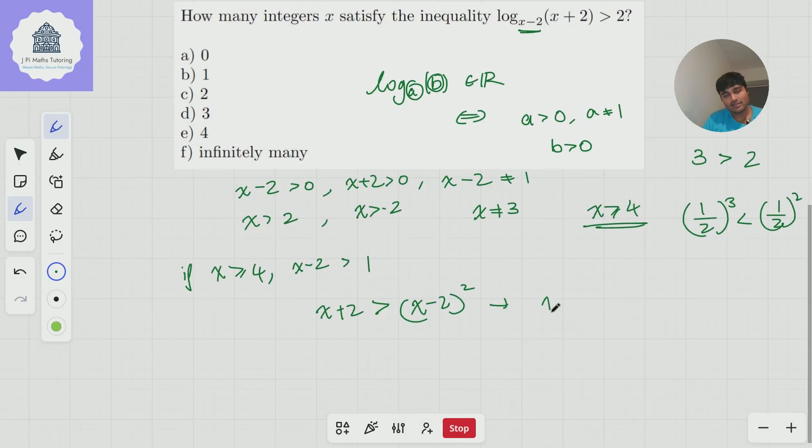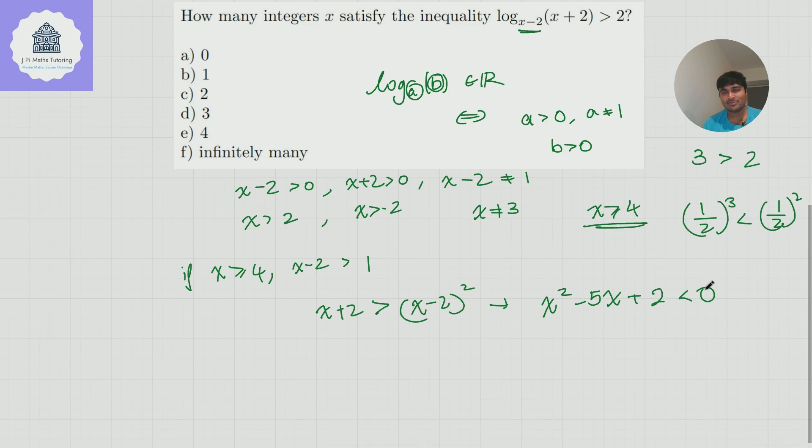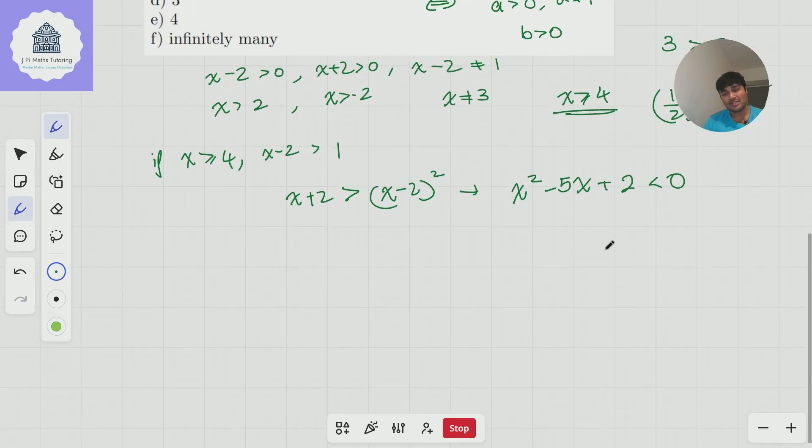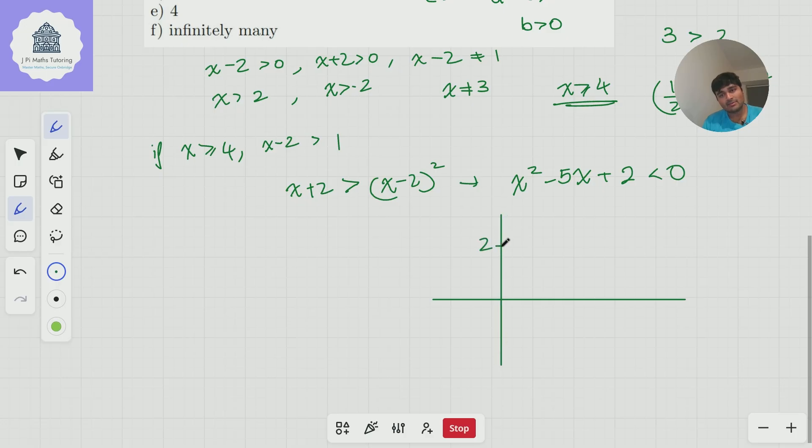So if we go ahead and solve this, we get x squared minus 5x plus 2 is less than 0, like so. And this doesn't look particularly nice. But you can solve this using the quadratic formula or completing the square or whatever. But we know that this is a positive quadratic. It's got a y-intercept of 2.